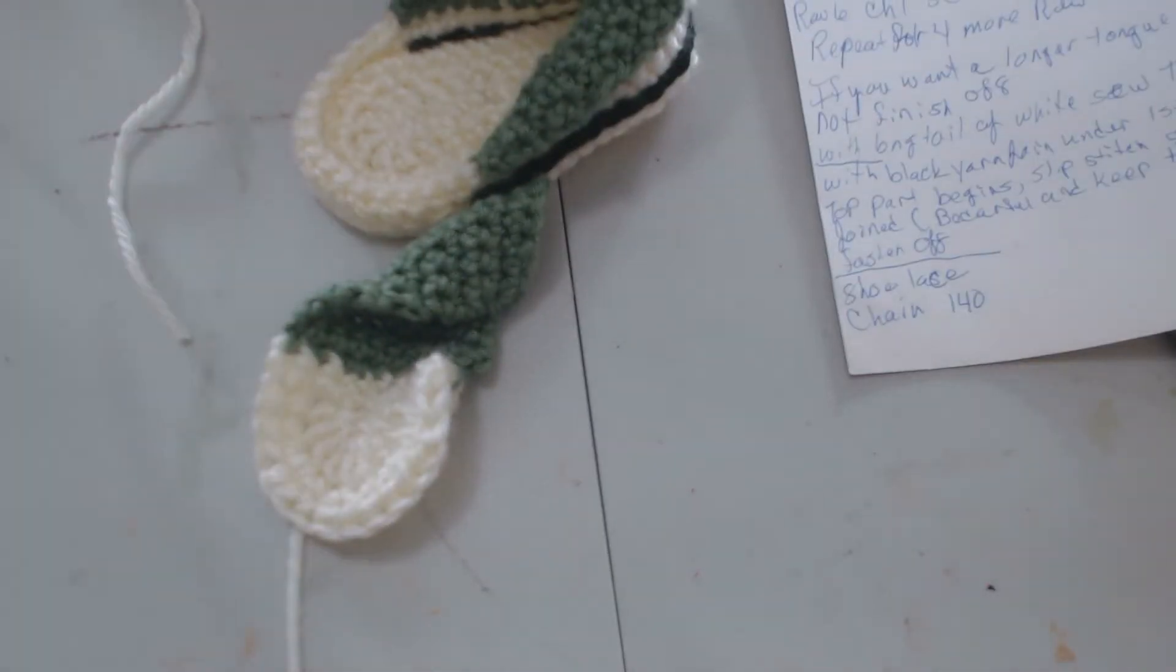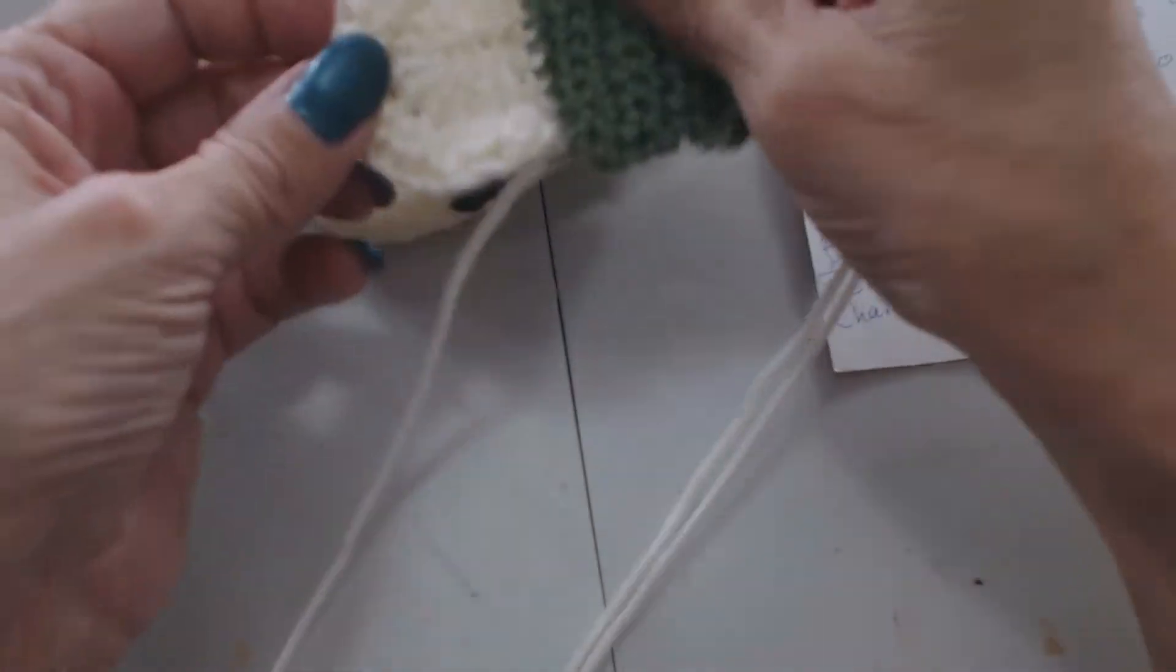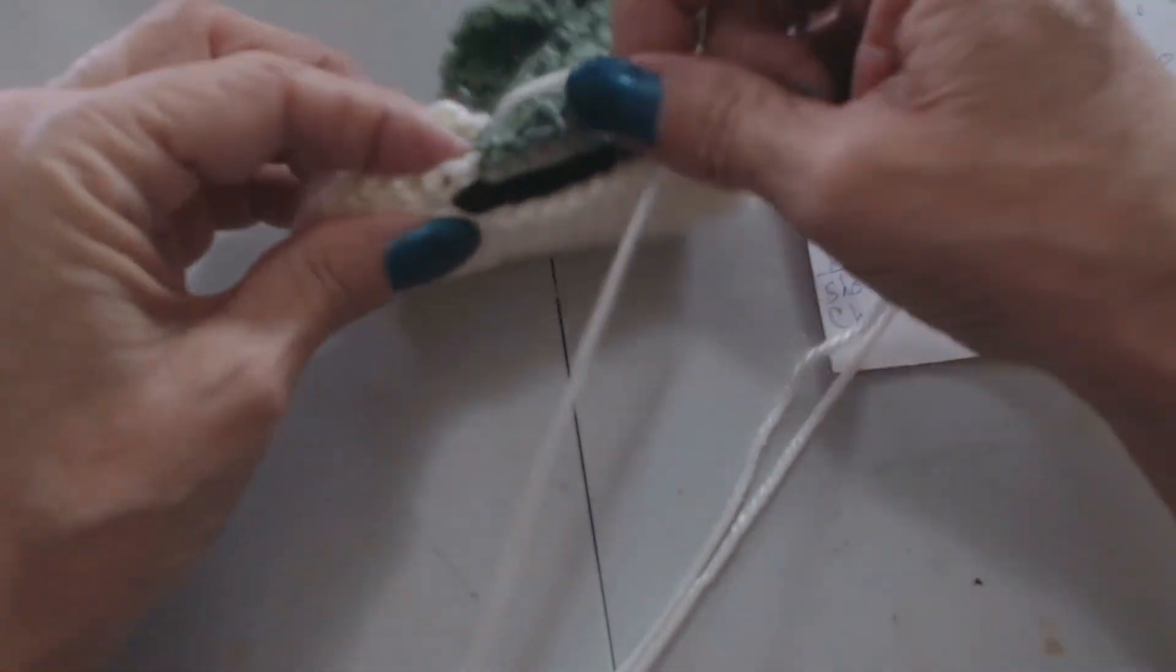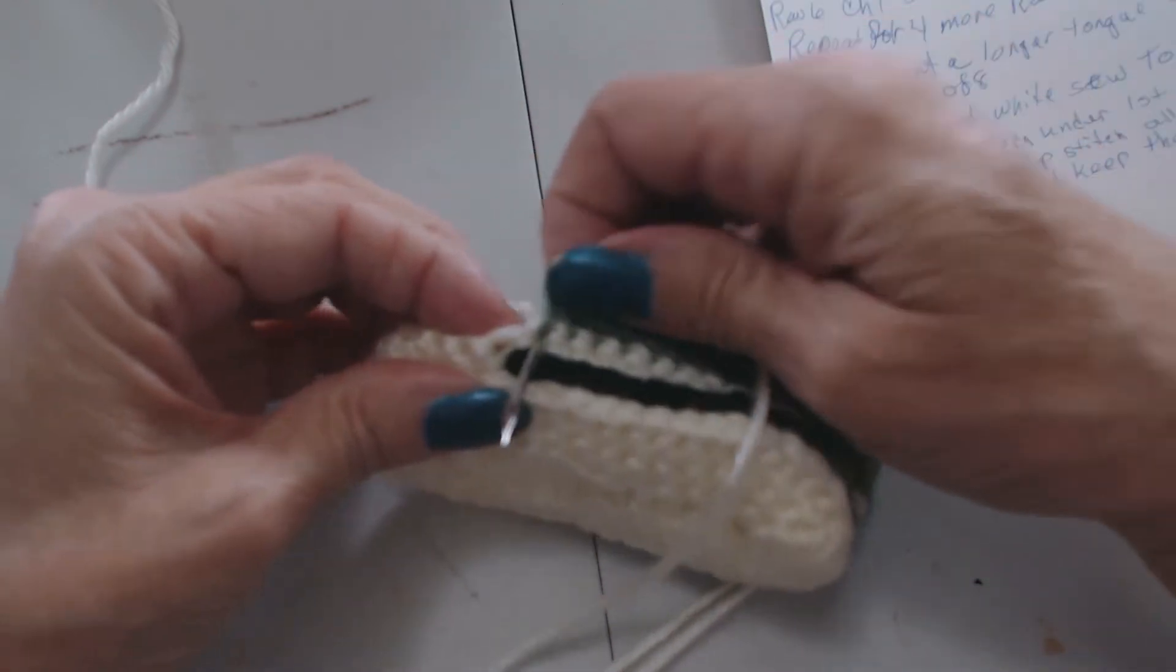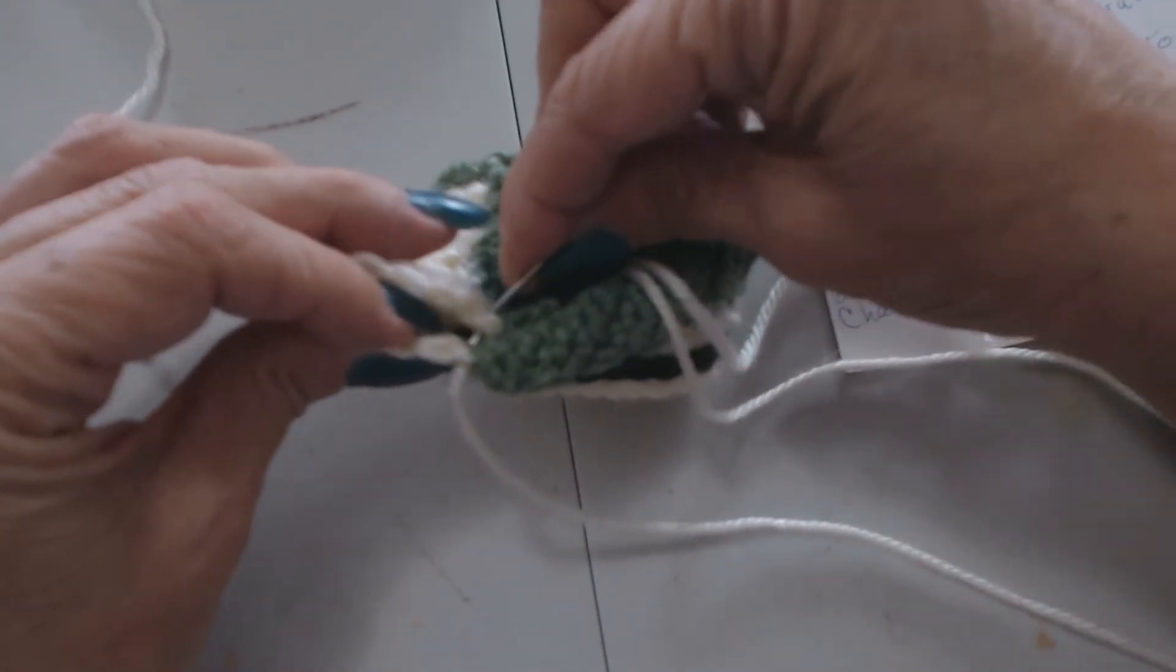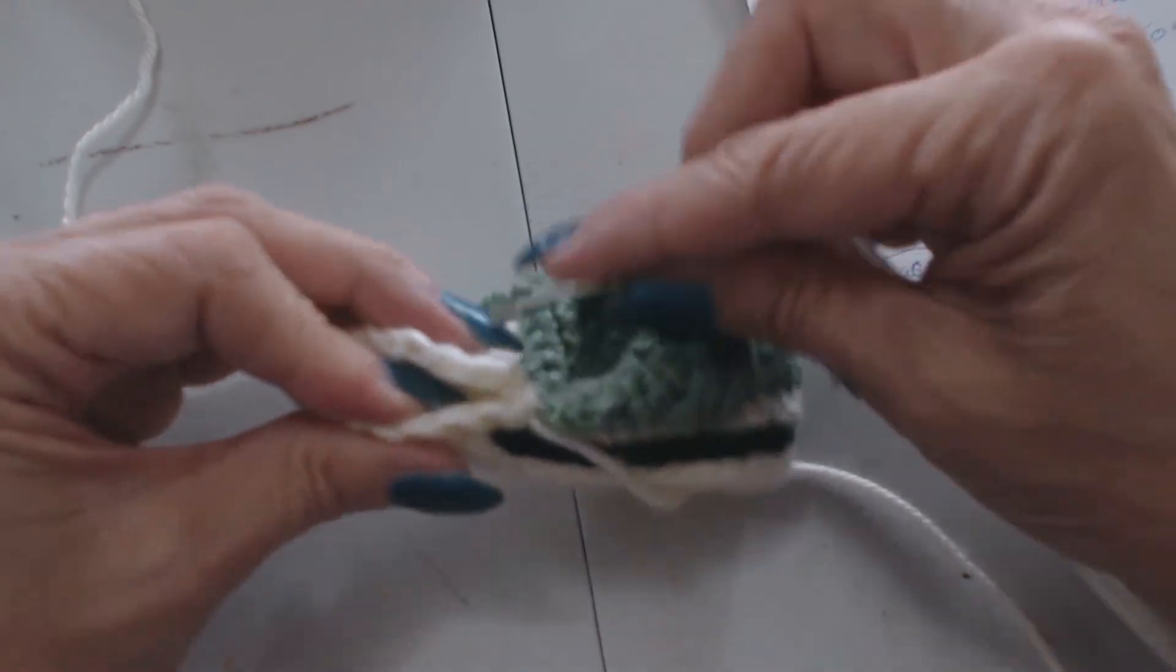Okay, now we're going to sew the top of this to the rest of the shoe. And like I said, I left two or three feet of a tail here so I have room to do this sewing. Kind of match it up and join here. You want to make sure you tack that good because that will be the weak spot. And now you just kind of whip stitch your way around.